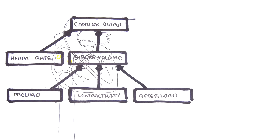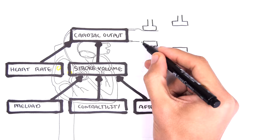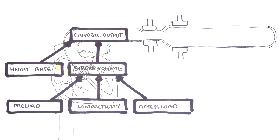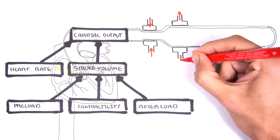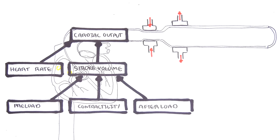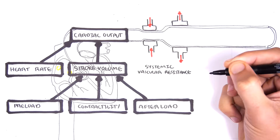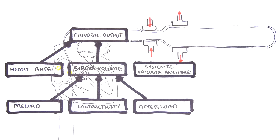In your vessels — your arteries and veins — there can be vasoconstriction and vasodilation. This will either increase or decrease resistance. All in all, this makes up your systemic vascular resistance, also known as your total peripheral resistance.